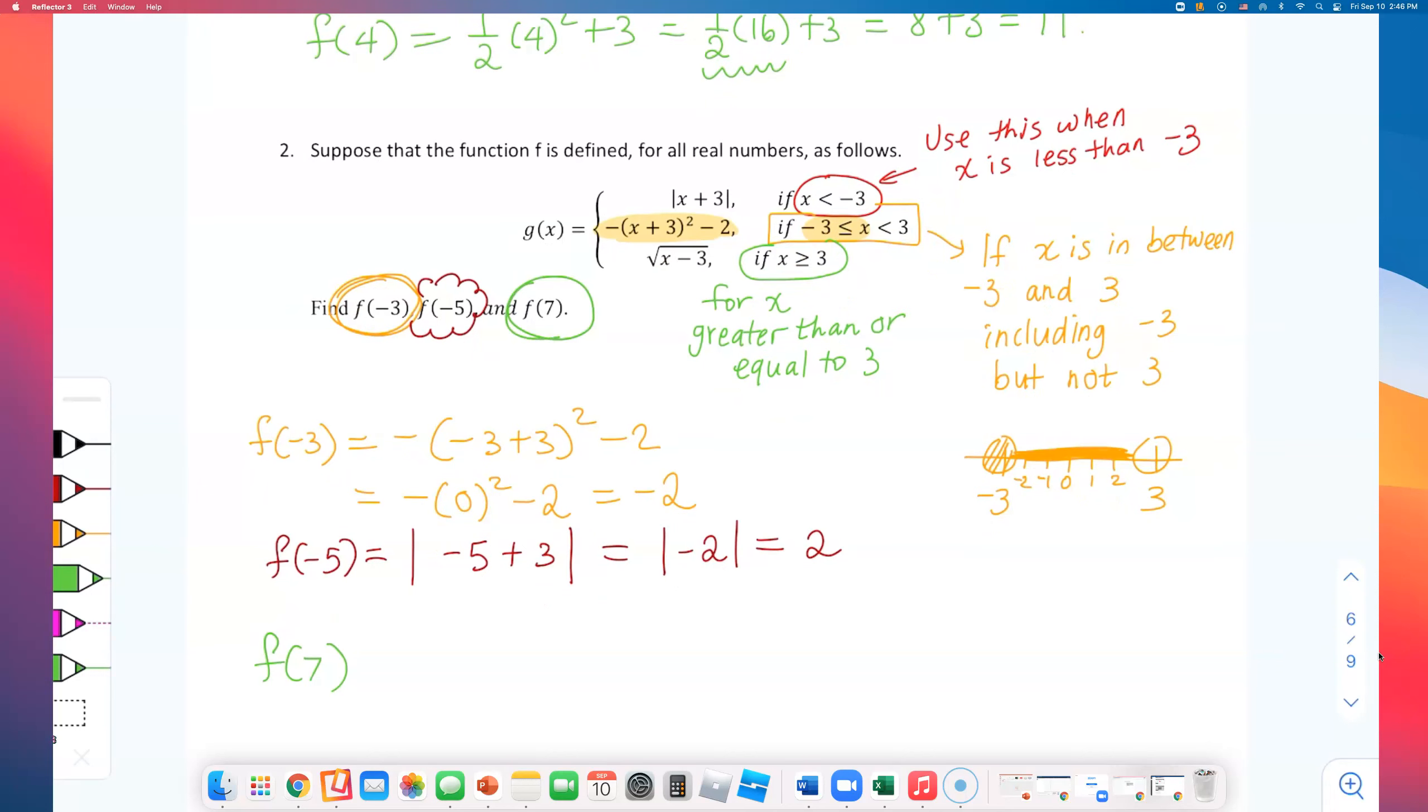Let's do the very last one. I need to do f of 7. 7 is greater than 3, so I should use this bottom square root function. Square root of 7 minus 3. 7 minus 3 is 4. And square root of 4 is 2.